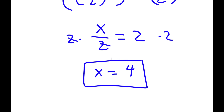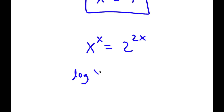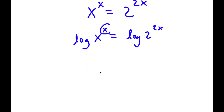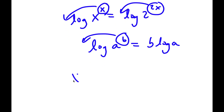I actually have a second method of solving this problem. I have x to the power of x is equal to 2 to the power of 2x. This time I'm going to take the log on both sides. So I have log x to the power of x is equal to log 2 to the power of 2x. Using the property log a to the power of b equals b times log a, I can move the exponents to the front. So now I have x times log x is equal to 2x times log 2.